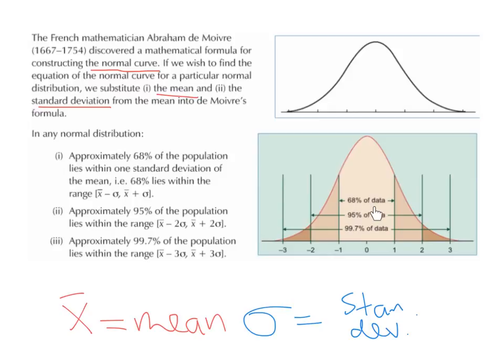95% of the data lies between minus 2 times the standard deviation and 2 times the standard deviation.